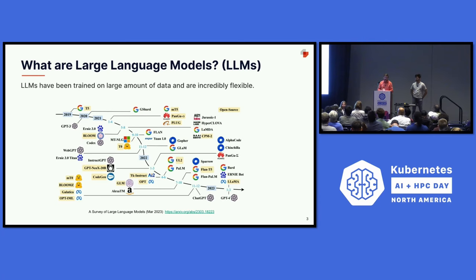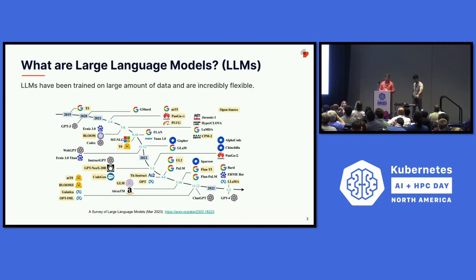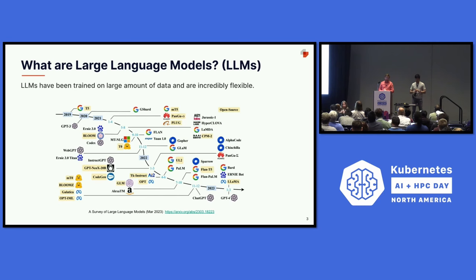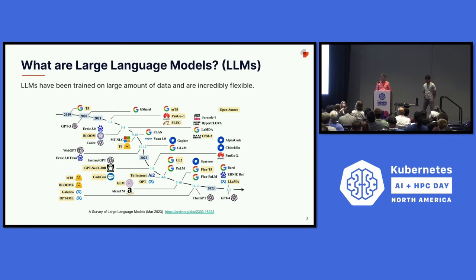For those who aren't familiar with LLMs, they stand for large language models. These started back in 2012 when the first generative pre-trained transformer model, or GPT, came out. Since then there's been a real progression in the last couple of years, in particular with GPT-3 from OpenAI leading to ChatGPT, which I'm sure you've all heard of.